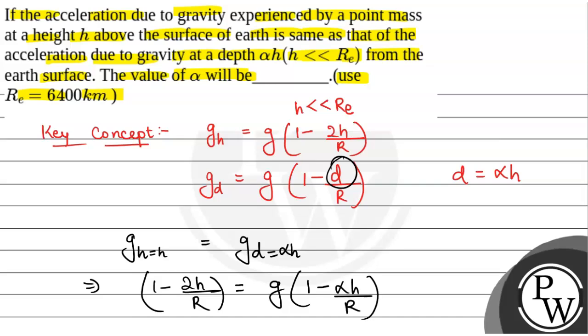So from here we will have alpha h equals 2h, or alpha equals 2. So the value of alpha will be 2. This will be the final answer. Hope you all understood it well.